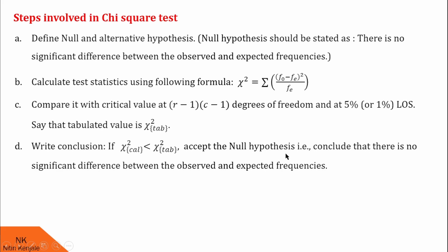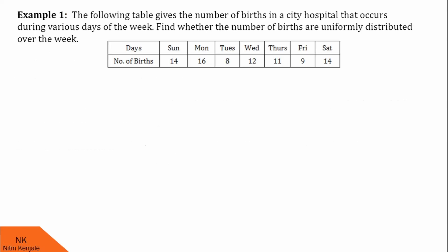That is, we conclude that there is no significant difference between the observed and the expected frequencies. And if chi-square calculated value is greater than chi-square tabulated value, then we do the opposite, that is, we reject the null hypothesis. I hope you understood these steps. Now, let us proceed for some examples.